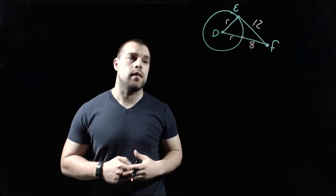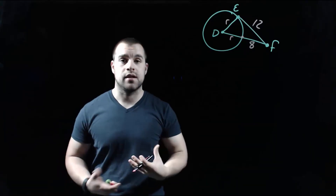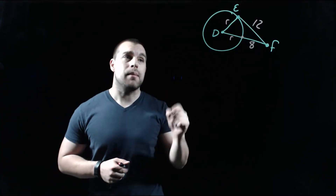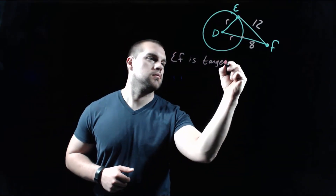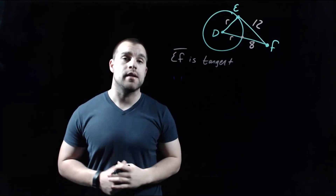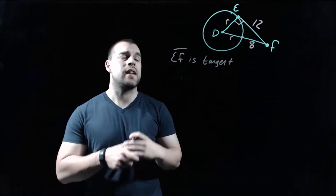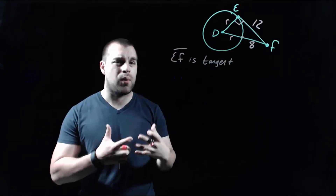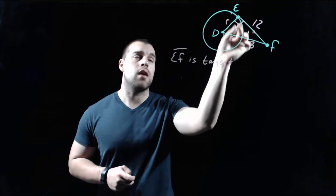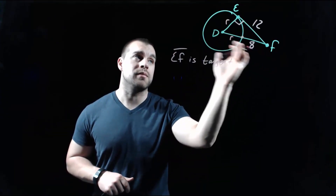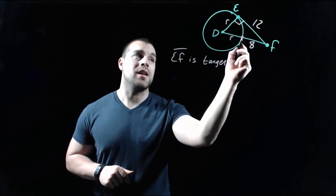This next example looks a little different. In the previous examples we were given three lengths and checked if it was a right triangle. Now I'm going to tell you that EF is already a tangent of our circle, which means it's perpendicular to the radius DE. We're going to use the Pythagorean theorem not to check, but to find the length of the radius R. The right angle is at point E, so the hypotenuse is from D to F. The length from D to the edge of the circle is R — that's the radius.